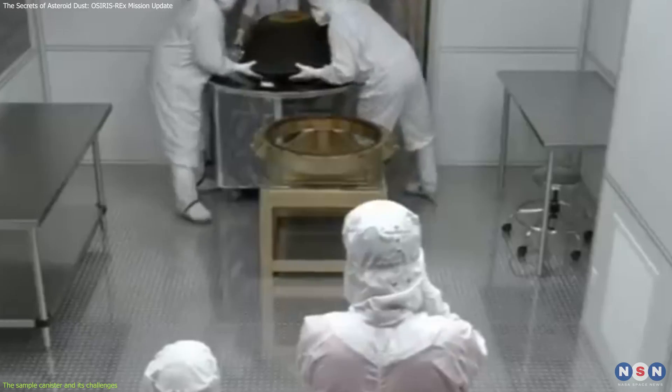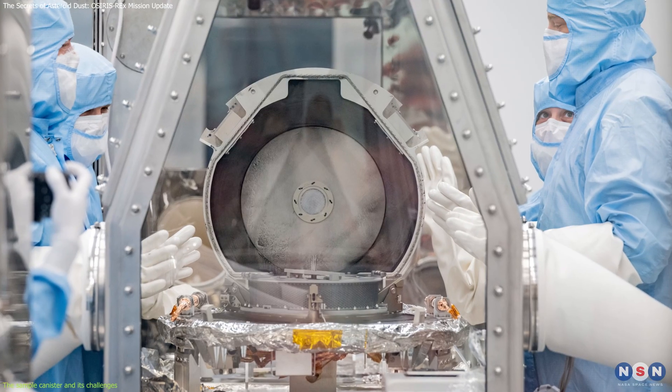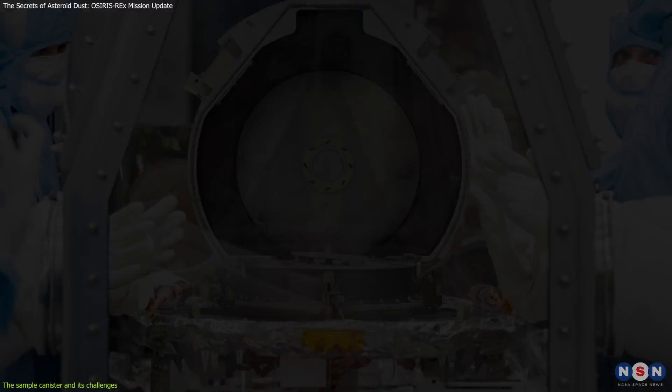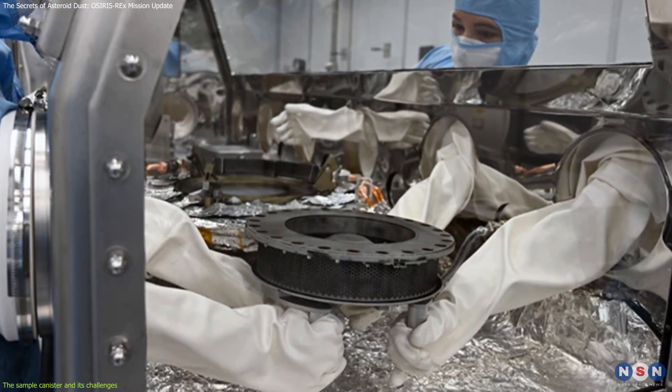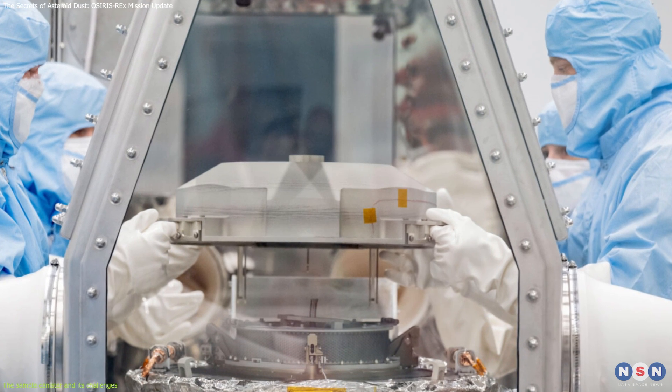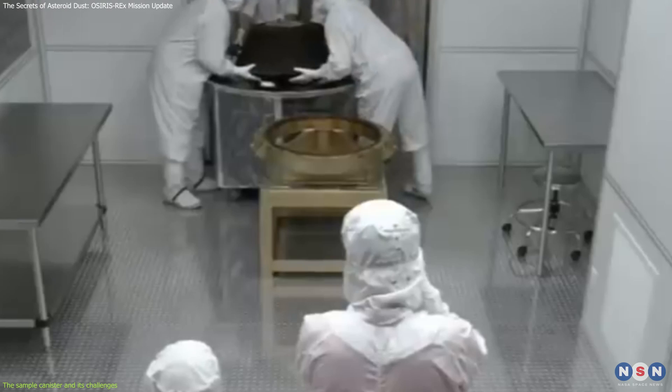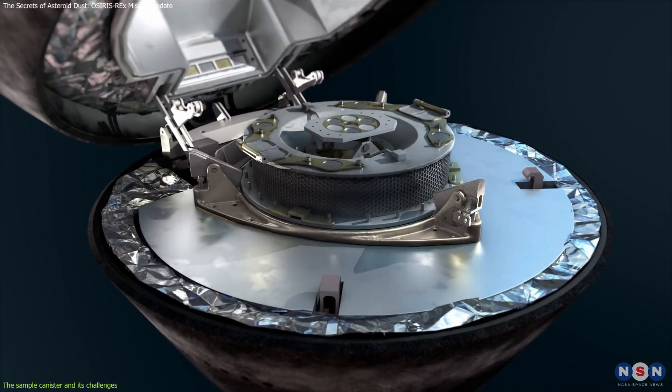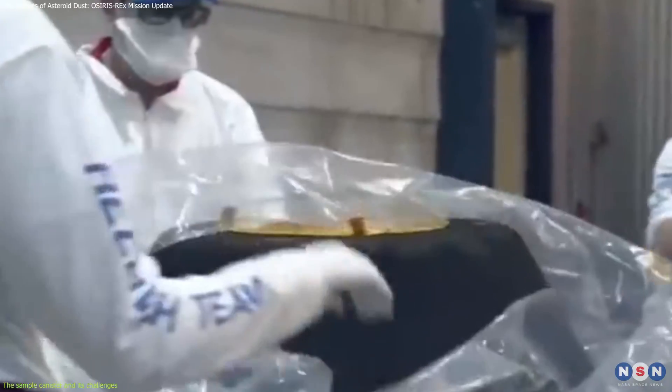It was then transferred to a special laboratory, where it was placed in a nitrogen-filled glove box to prevent contamination. The scientists had to follow strict protocols and use special tools to access the canister and its contents. This was a very delicate and complex process, because the canister and the dust were very valuable and fragile and could easily be lost or damaged during the extraction process.